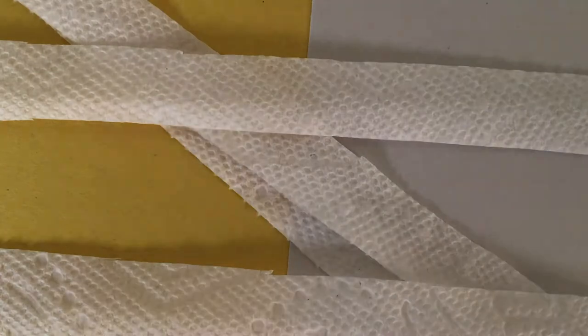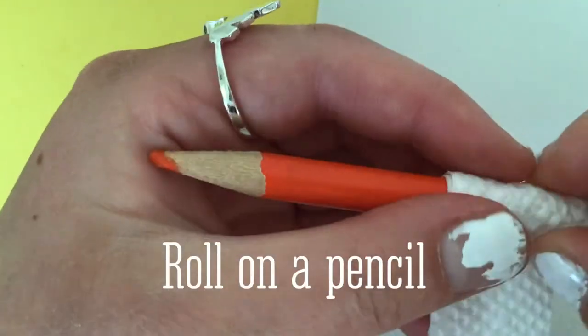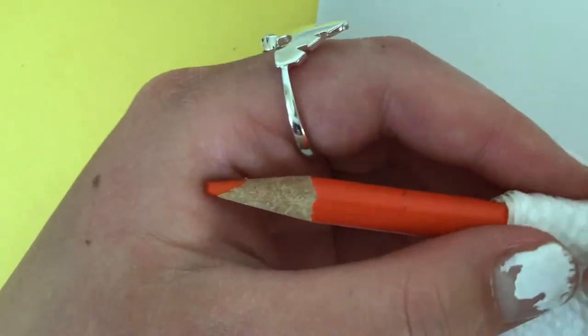First, cut up the napkins into several strips. Roll them around a pencil to get the perfect shape.